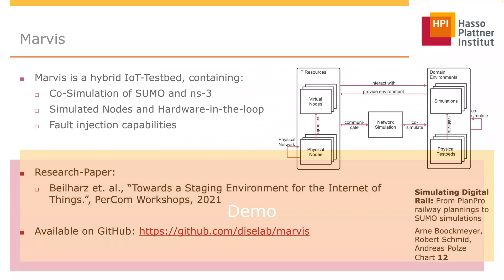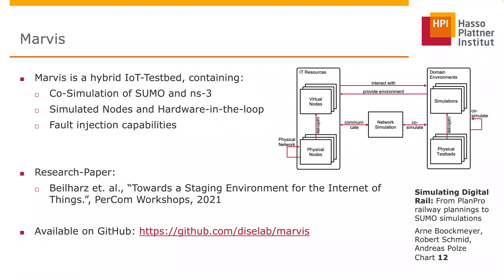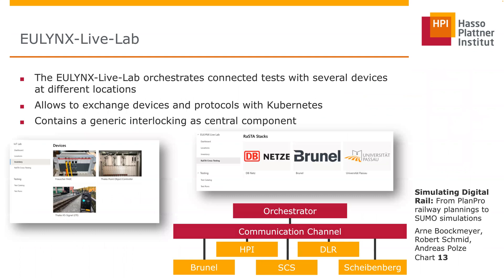Regarding how we're going to use this: on one hand, we have an IoT testbed called Marvis, which is a co-simulation of SUMO and NS3. This testbed can run Docker containers, do hardware-in-the-loop, and has fault injection capabilities. With this testbed we can say, for example, that this device is an axle counter in a Docker container, or this device is a point — we actually have object controllers for points in our lab. Another idea is the Unix Live Lab developed by my colleague Robert Schmid, focusing on hardware and exchanging protocols, where the train simulation could be useful for interoperability and conformity tests.